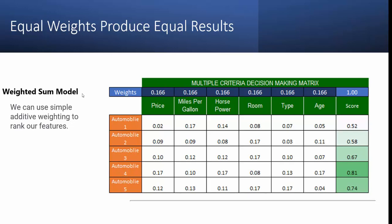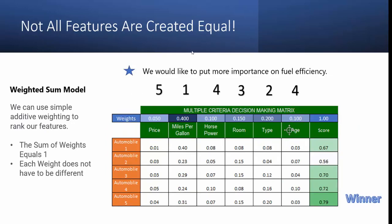Hence the weighted sum model. We know that not all features are created equal. So we can use the weighted sum model because we know the sum of the weights equal one. And each weight does not have to be different as we see from our results.